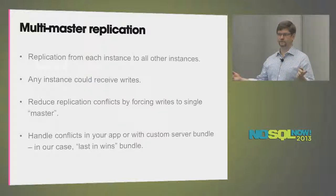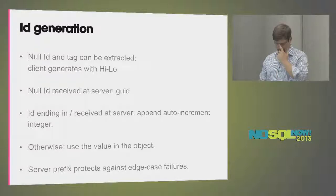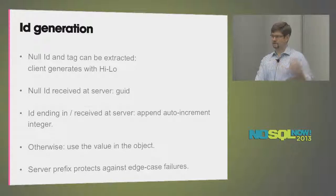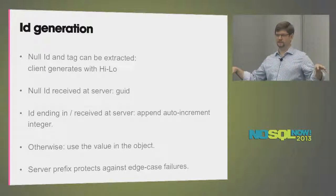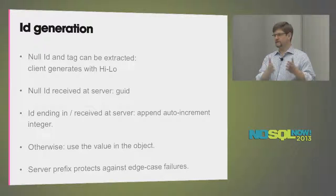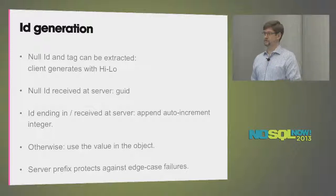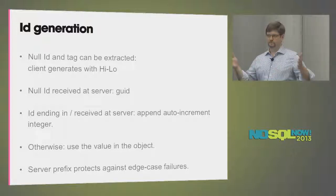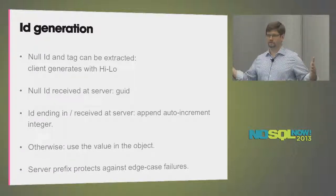ID generation uses HiLo strategy. It's basically a way to let the client control ID generation — to give out IDs without having to go to the server, but guarantee that none of the clients are giving out the same ID. The server gives out a high number and a range: here are 32 IDs you can give out. Every 32 IDs, there's a request to the server to get a new batch. It's smart enough to do exponential expansion of that range, so if there are a ton of requests coming in, the range will expand so it's not asking the server constantly.